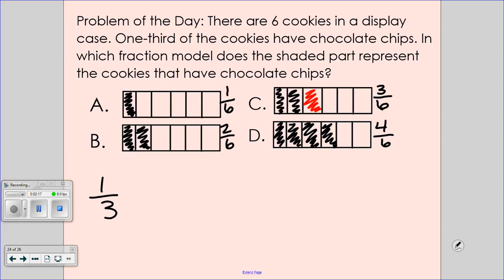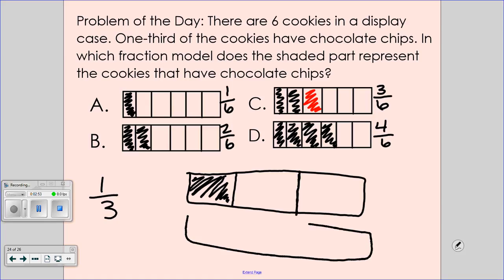What if you didn't know? Draw a bar underneath in your notebook. Partition that bar into thirds. Draw another bar. Remember when we compare fractions, the bars have to be the same length. They have to be equal. I'm going to partition this into six. Why am I partitioning into six? Because that's what all my options are broken into.